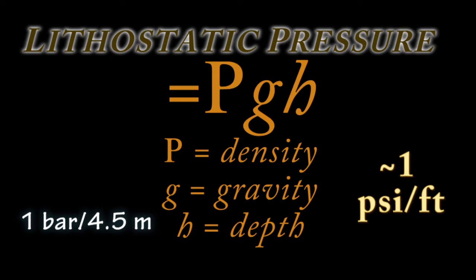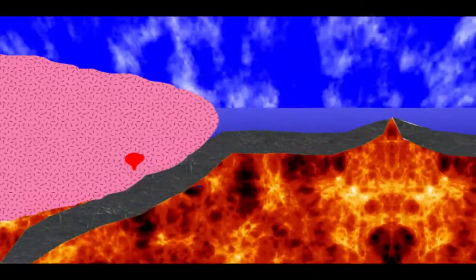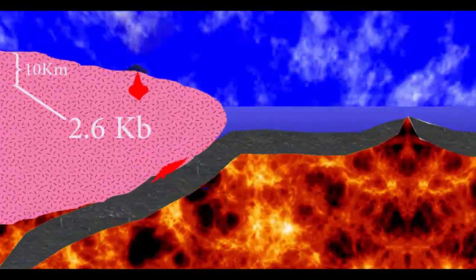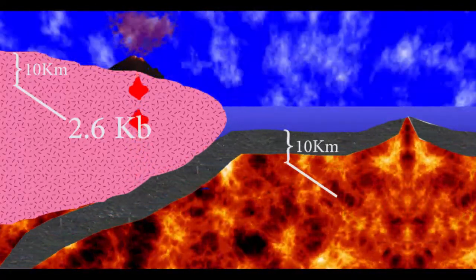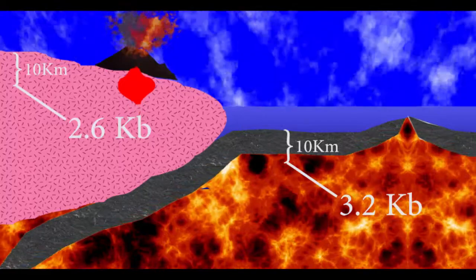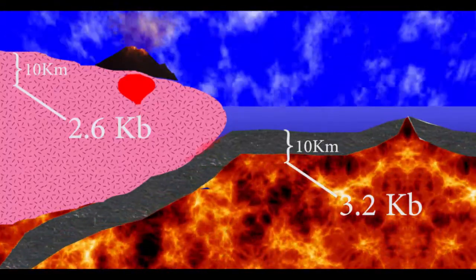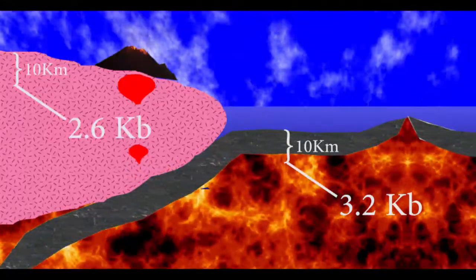Lithostatic pressure at a given depth is primarily dependent on the density of overlying rock, as g doesn't vary as much. As a general guide, the pressure at 10 kilometers depth in the crust ranges from 2.6 kilobars below lower density rocks that might be found in continents, and can be up to about 3.2 kilobars at 10 kilometers below higher density rocks, such as those making up ocean crust. But there are exceptions to these comments on pressure.